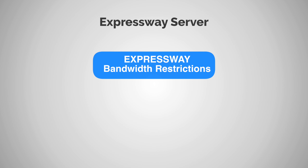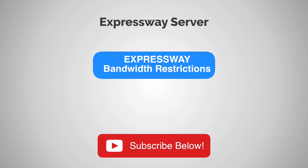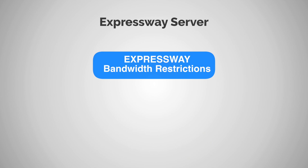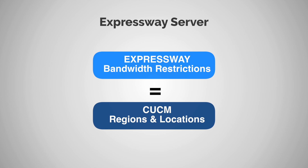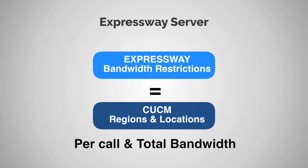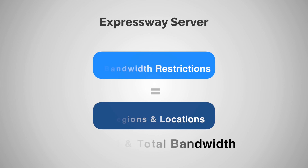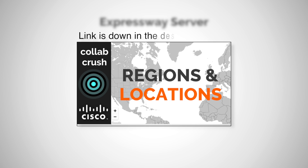Hello and welcome to the channel. Today we're going to continue our discussion on the Expressway servers and talk about bandwidth restrictions. Bandwidth restrictions on the Expressway are similar to regions and locations on the CCM — essentially you're allocating bandwidth on both a per call and total bandwidth basis. If you'd like to brush up on regions and locations on the CCM, I already have a video on this topic you can check out — look at the link in the upper right-hand corner or check down in the description.